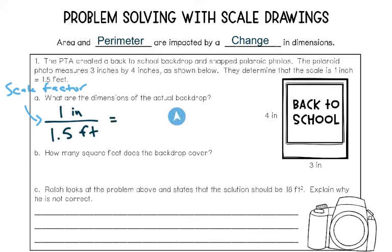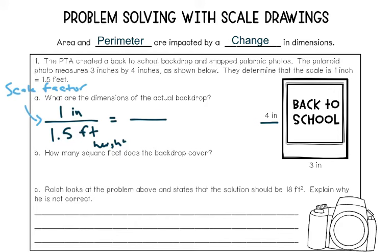The new fraction I'm looking for is the dimensions of the actual backdrop — I need to find both the height and the width. I'll start by finding the height. You set up a new fraction and put the information you have in the right spot — the numerator or the denominator. I have a height of 4 inches, so I need to put that 4 inches on the top, because it has to match with inches on the other fraction. It just has to match going across. So we're solving for the missing value of the actual feet dimensions of the height.